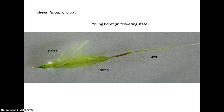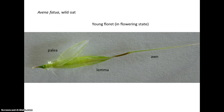Here's a younger-stage floret from the wild oat, showing the lemma with the awn coming off the back of the lemma. The palea has been moved aside, but in its normal position the lemma wraps around the smaller bract — the palea — like wrapping one hand around the other, not completely enclosing it but wrapping around. Between the lemma and palea is where the actual flower is. You can see some remains of stamens in there.